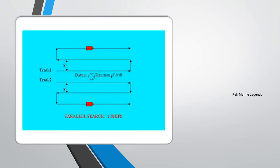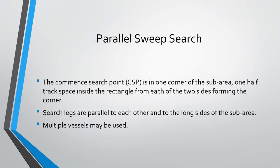This diagram shows the parallel sweep search being carried out by two ships simultaneously. The track spacing is referred to as the letter S, which is kept constant. The Commence Search Point (CSP) is in one corner of the sub-area, with one half track space maintained from each of the two sides forming the corner. Search legs are always parallel to each other and to the long sides of the sub-area.